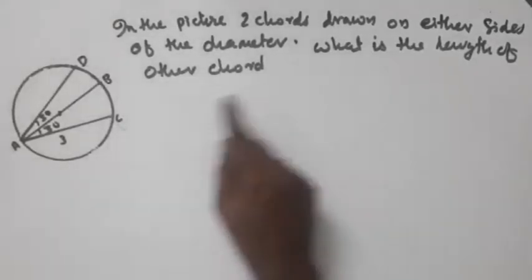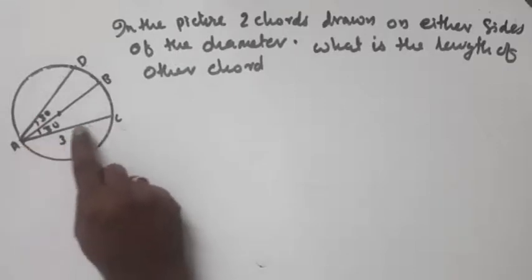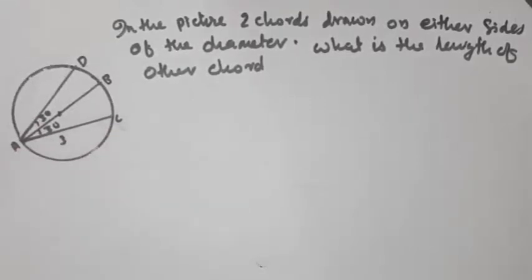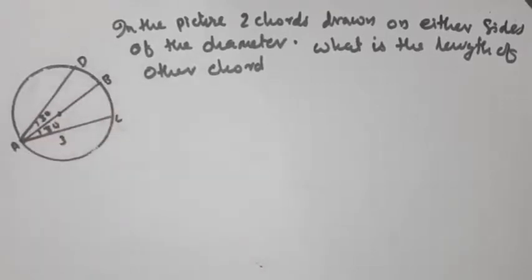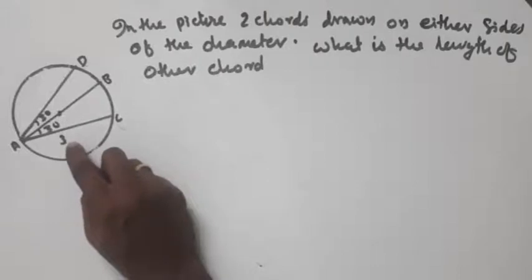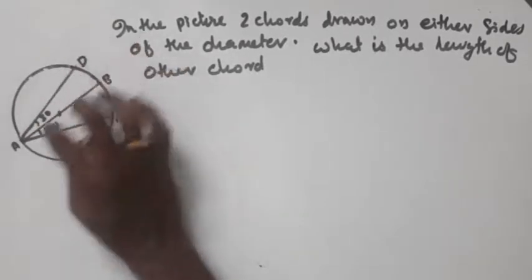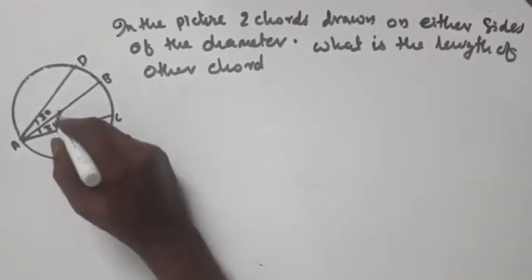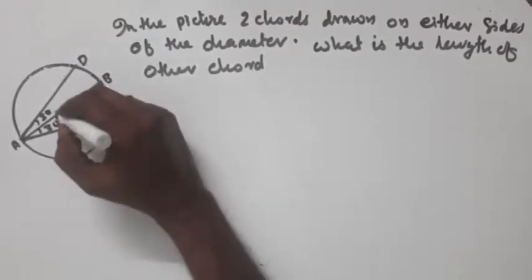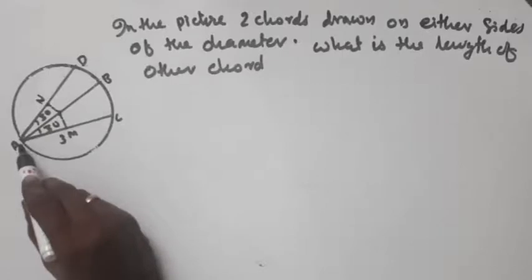In the picture, two chords are drawn on either side of the diameter. The length of one chord is 3 cm. I would show you that we have a perpendicular line intersecting with the chord, and we will prove they are of equal length.